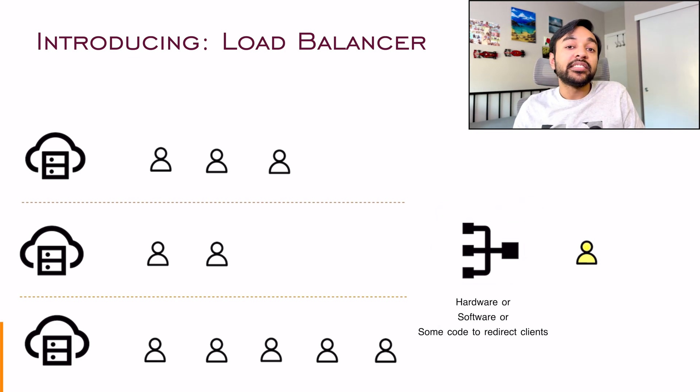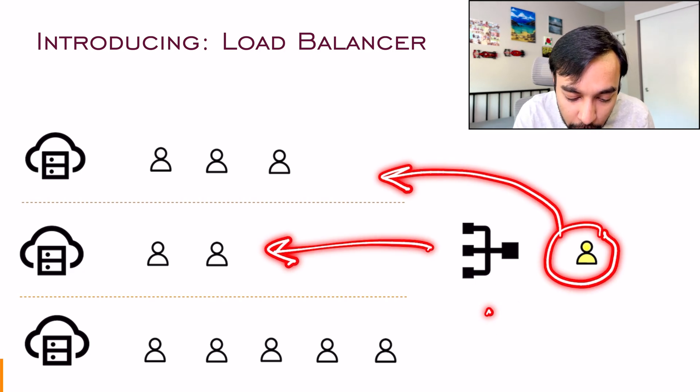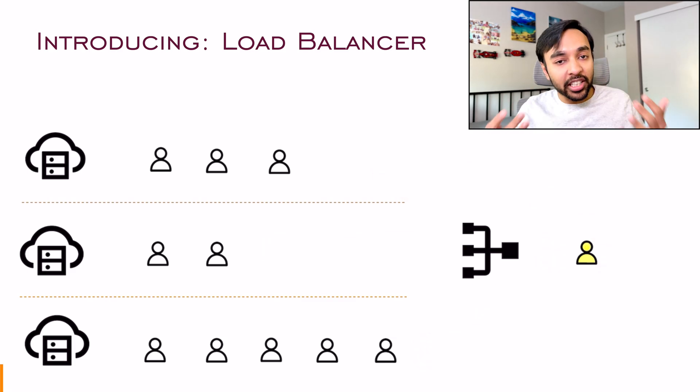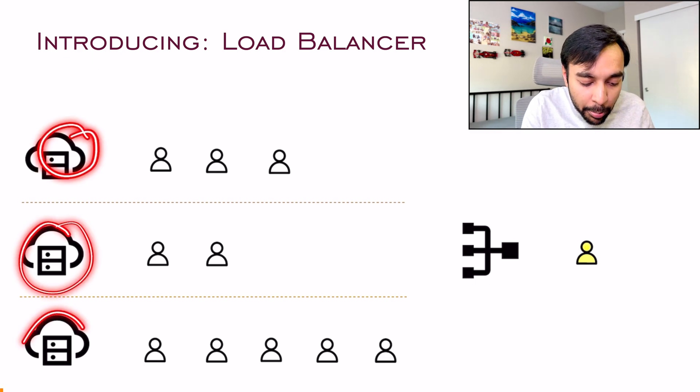This load balancer could be a hardware, it could be a software or it could simply be a piece of code that decides that, okay, if a client comes, where should they go? Should they go to the first server? Should they go to the second server or should they go to the third server? And certainly there are multiple ways by which you can allot this client to any of these servers. Always remember that our end goal is that each of these servers should be balanced.